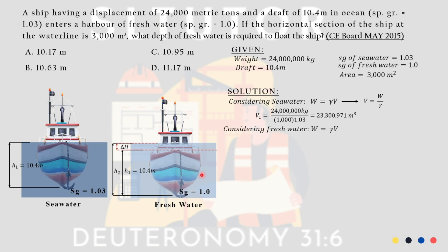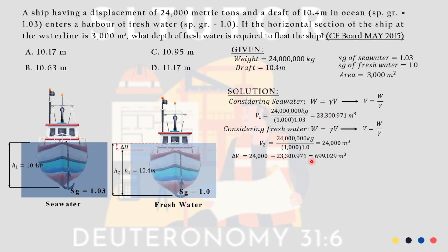Now considering the freshwater: weight equals gamma times volume, isolating volume as weight over gamma, plugging in 24,000,000 kilograms with gamma = 1.0 times 1,000, we get V2 = 24,000 cubic meters. The change in volume is V2 minus V1: 24,000 minus 23,300.971 equals 699.029 cubic meters. We know volume equals area times height, so isolating delta H: delta H = 699.029 divided by 3,000, giving us 0.233 meters.